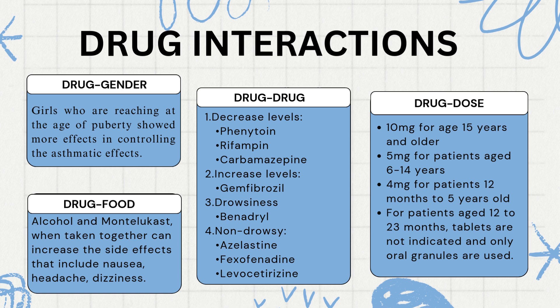Drug-Dose Interactions — Recommended doses: 10 mg for age 15 years and older; 5 mg for patients aged 6 to 14 years; 4 mg for patients 1 to 5 years old. For patients aged 12 to 23 months, only oral granules are used.